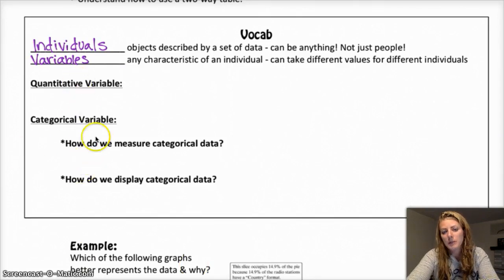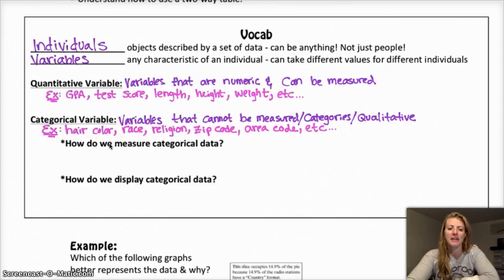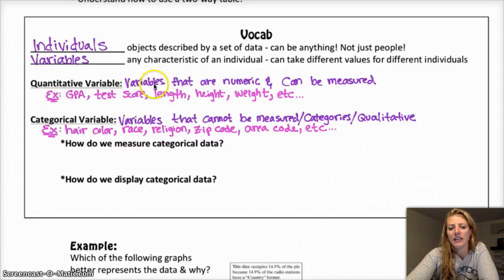So that's the difference between the two. Today we're going to focus on categorical variables, but there's a difference between the two, and those are the two different types of data that we talk about that really exist in the world. I just threw a couple of other examples up there. Other quantitative variables are test score, length, height, width.